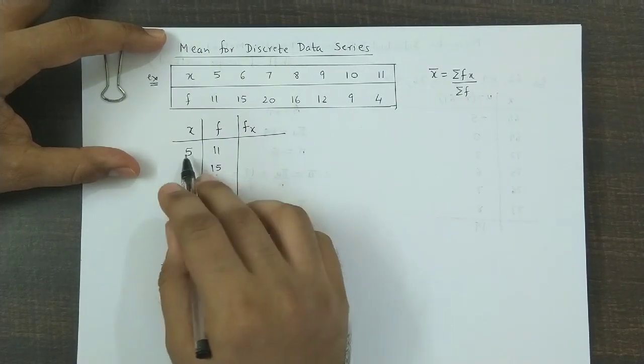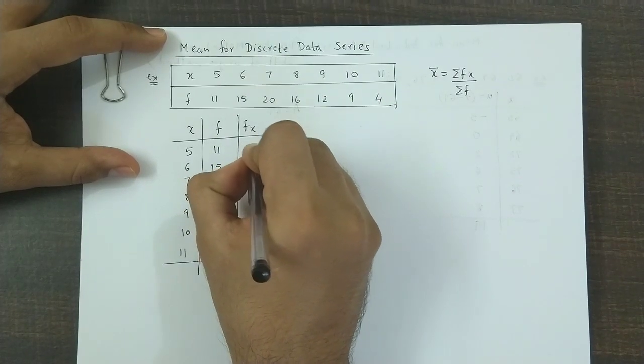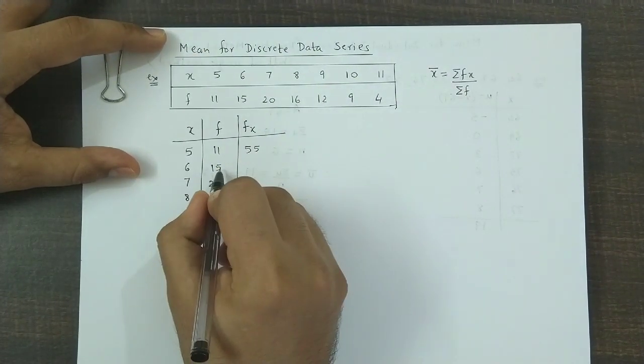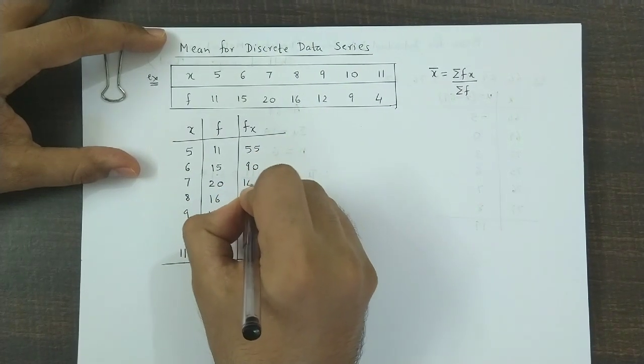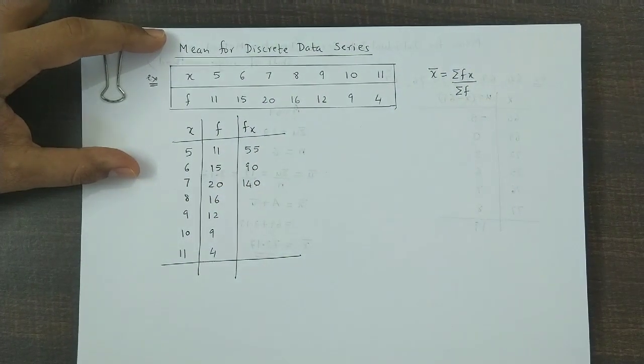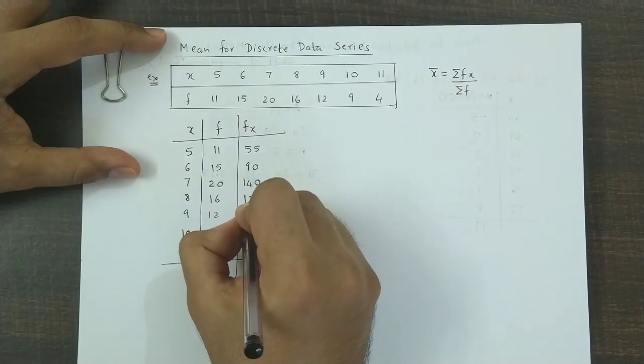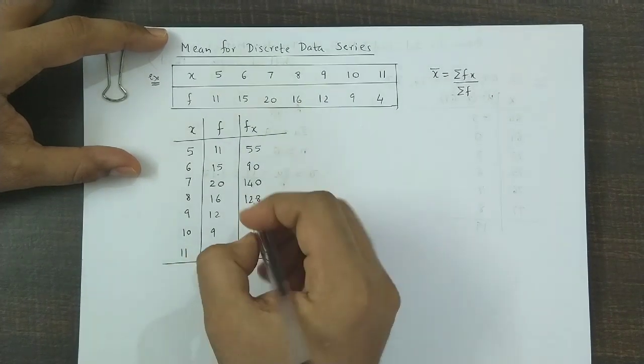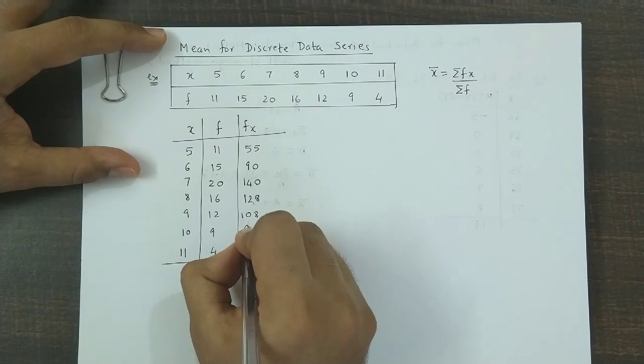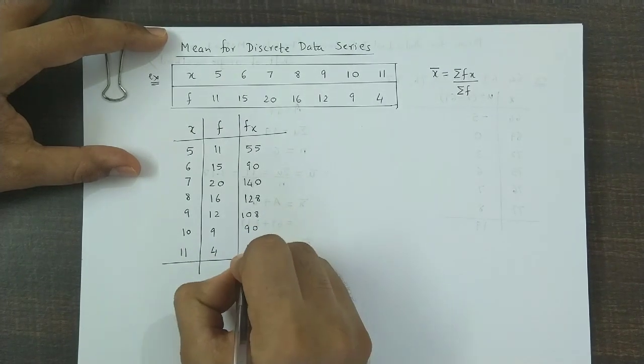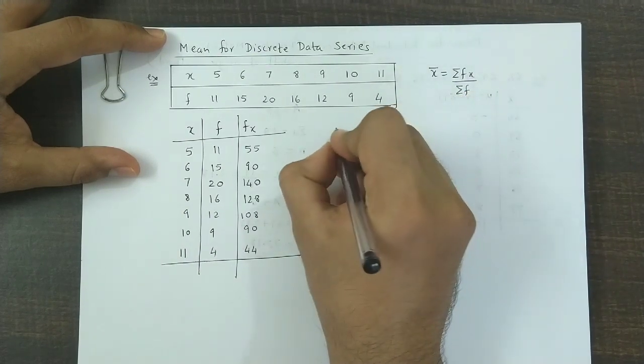Now you would multiply these two columns, f times x. 5 into 11, that would be 55. 6 into 15, this would be 90. Next product would be 140. Next is 8 into 16, that is 128. This product is 108. This would be 90, and lastly 44. Now we need all these values.